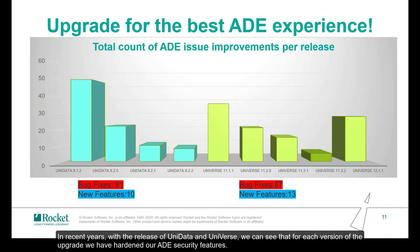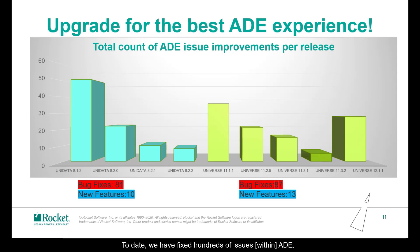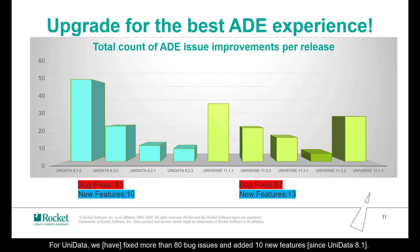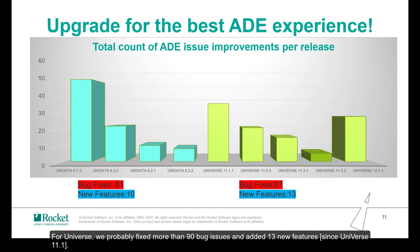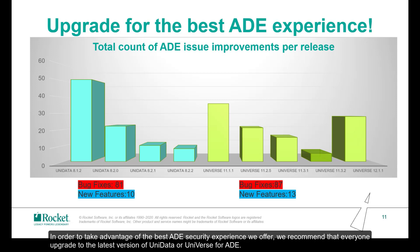In recent years, with each release of Unidata and Universe, we can see that for each version upgrade, we have hardened our ADE security features. To date, we have fixed hundreds of issues to ADE. For Unidata, we fixed more than 80 bug issues and added 10 new features. For Universe, we fixed more than 90 bug issues and added 13 new features. Therefore, the latest version of these server releases make use of the best ADE improvements, which function more stably and provide stronger security. In order to take advantage of the best ADE security experience, we recommend that everyone upgrade to the latest version of Unidata or Universe.